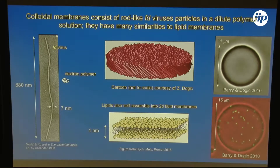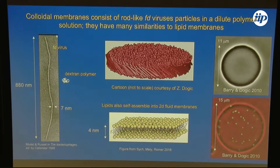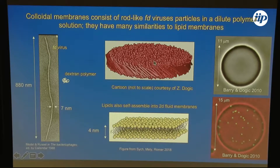The colloids in these colloidal membranes are viruses. You can think about the molecules in this membrane as being rods — the rods are about a micron long, seven nanometers in diameter. You put them in solution with polymers like dextran, and the depletion force pushes them together, and they self-assemble into these membranes. In the middle of the membrane, all the rods are more or less pointing up.